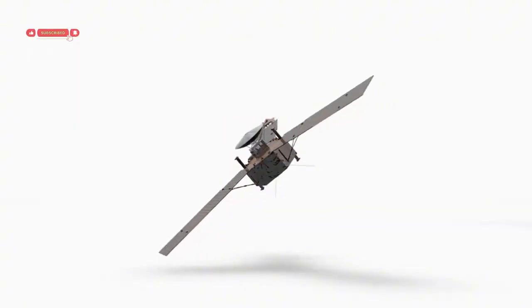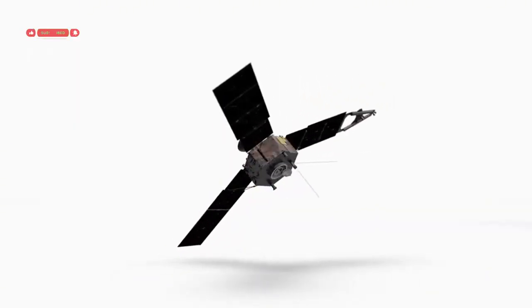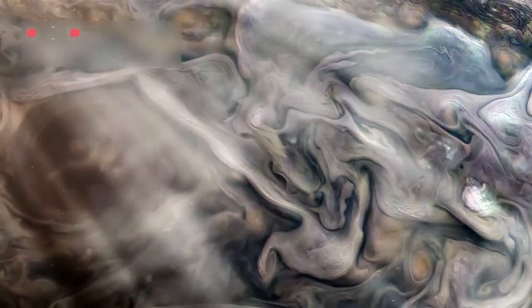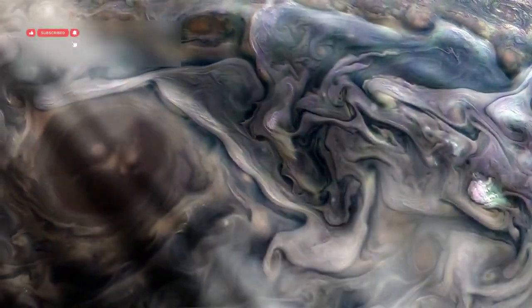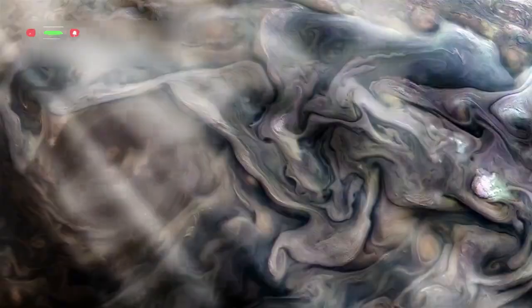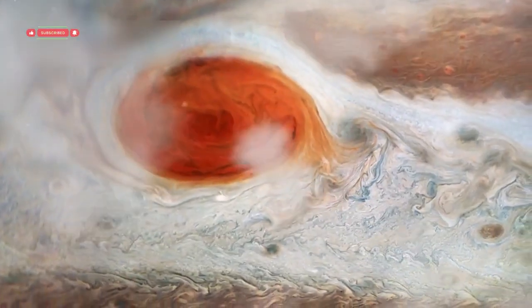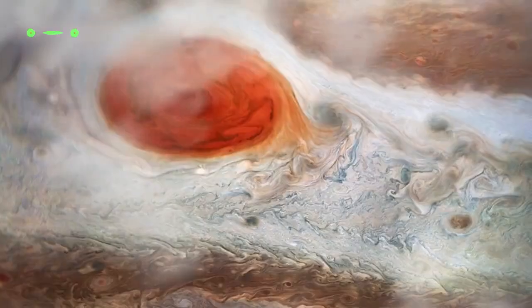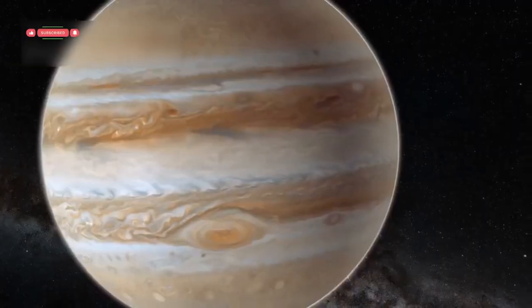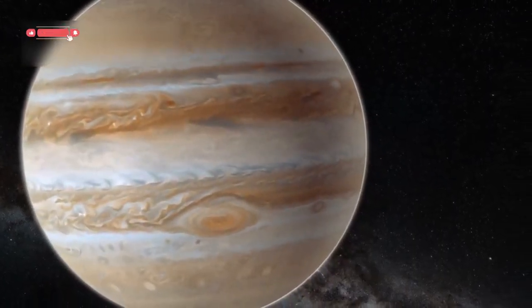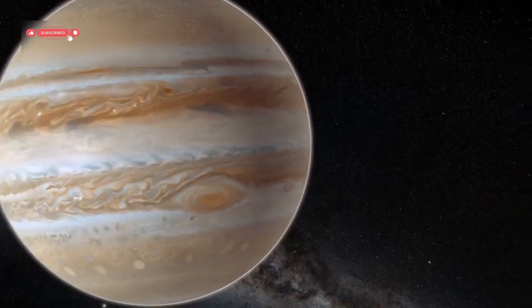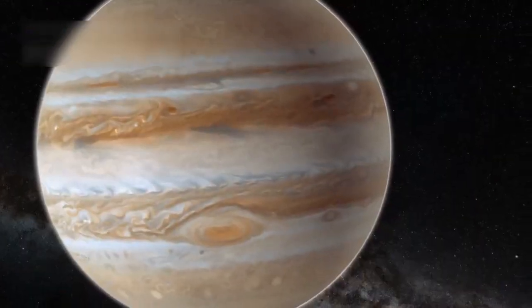At Jupiter, the Voyager probes revealed hidden wonders. They saw the swirling storms and colored bands in Jupiter's huge atmosphere with amazing clarity. The Great Red Spot, a giant storm on Jupiter, was captured in detail for the first time. The probes even discovered that Jupiter has a faint ring system of its own, and they photographed dozens of small moons orbiting the giant planet.